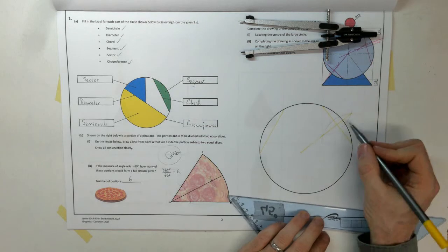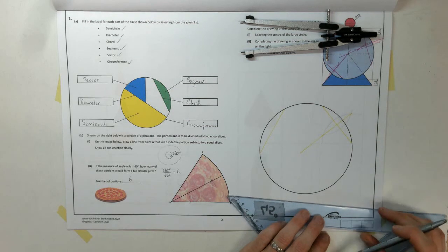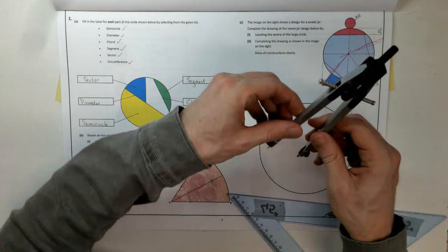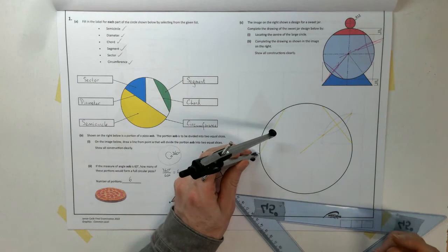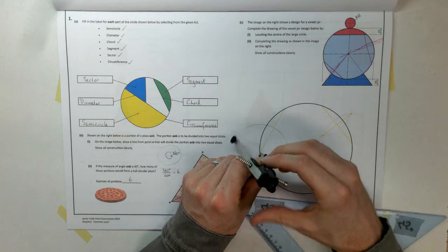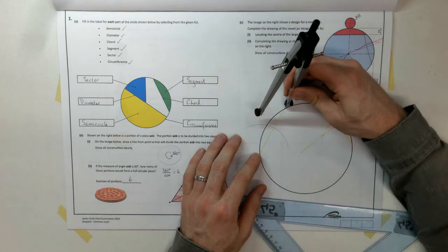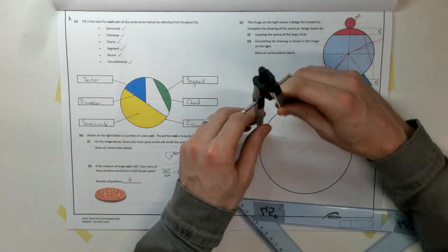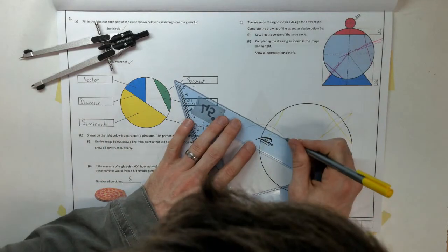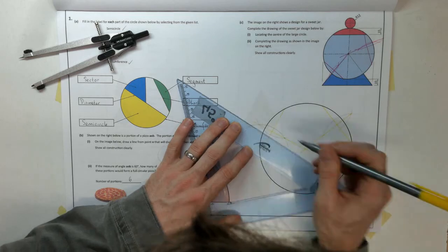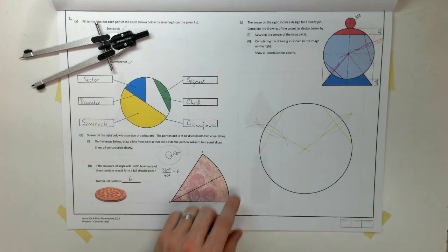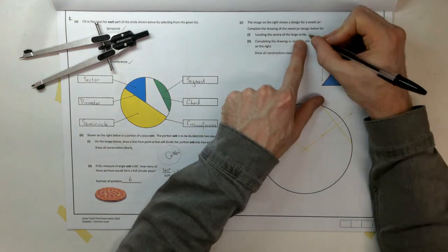So, where those two arcs across each other. I'll join them up, and extend it through. So, that line is running through the centre of my circle, but I don't know where exactly along that line. So, that's where the second chord comes in. I'm going to bisect it also. So, compass set any distance again, once it's more than half.